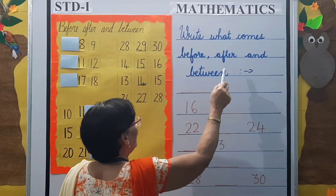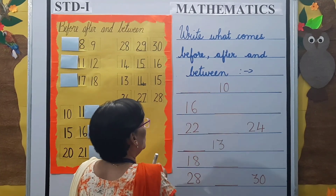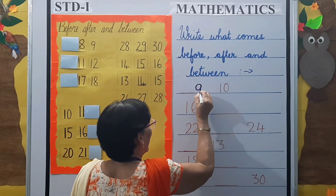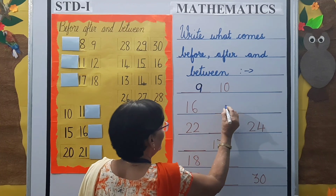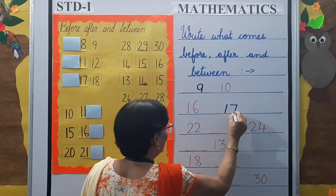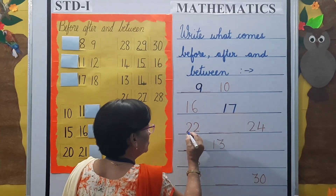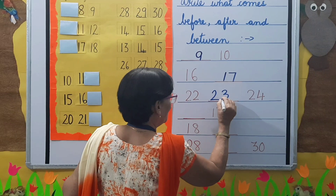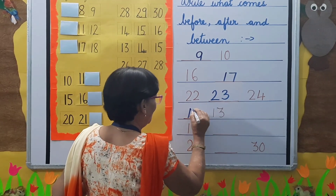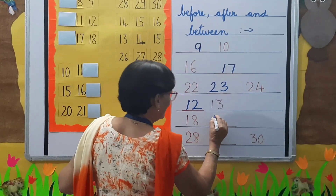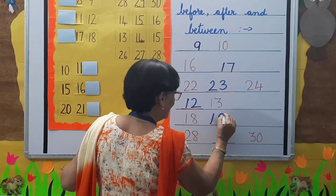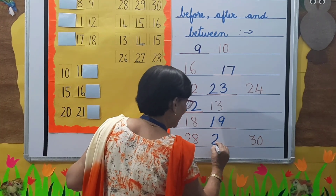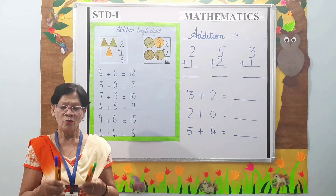Now let's do an exercise with before, after, and between numbers. Before 10 is 9. After 16 is 17. Between 22 and 24 is 23. Before 13 is 12. After 18 is 19. Between 28 and 30 is 29.